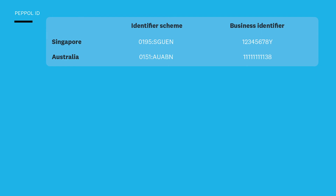In the demo we were using a PEPL ID to send and receive e-invoices. In the majority of cases, the PEPL ID is based on the business's UEN or unique entity number. The left-hand side shows the identifier scheme — for Singapore, 0195 represents Singapore, and SGUEN shows that we're using a Singapore unique entity number. In other countries that looks slightly different. Australia's country identifier is 0151 and they use the Australian Business Number. On the right-hand side we'll see the business identifier — for Singapore, that's the unique entity number. Put those two together and you get the PEPL ID.